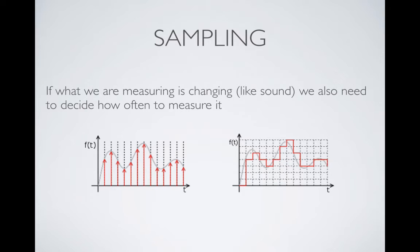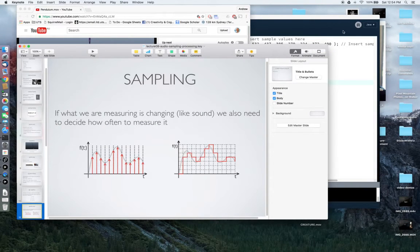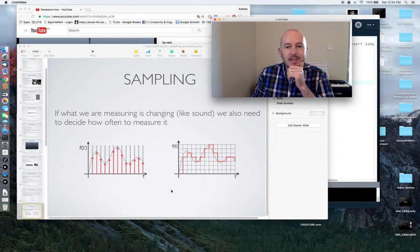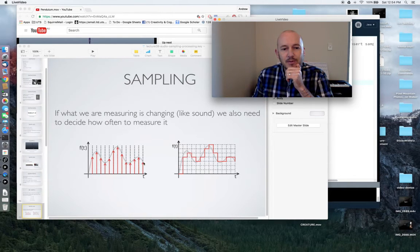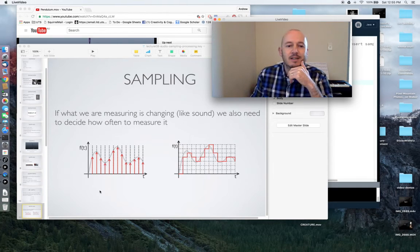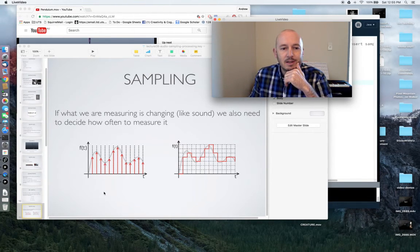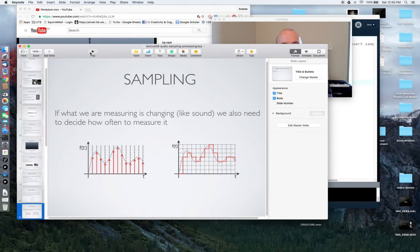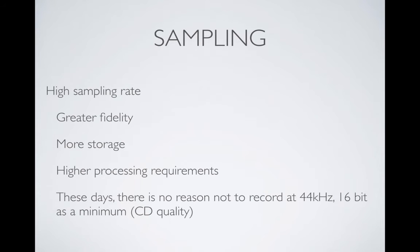If what we're measuring is changing over time — like sound, where the movement of the microphone changes over time — we need to decide how often we're going to measure it. Just like with the pendulum, we started measuring once a second and then increased to twice a second. If you use a higher sampling rate — sampling more times per second — then you're going to get greater fidelity to your source. You'll need more storage and have higher processing requirements.